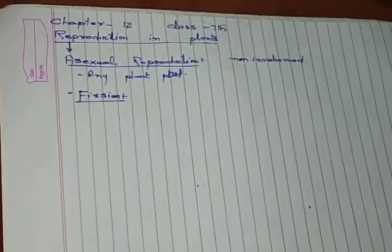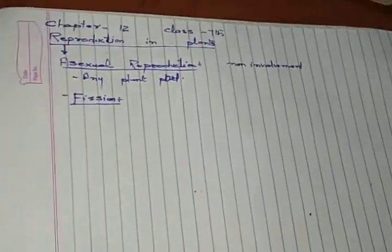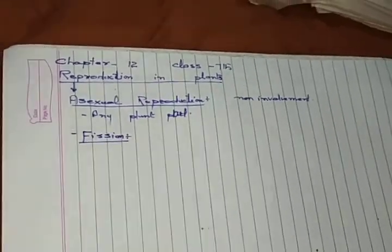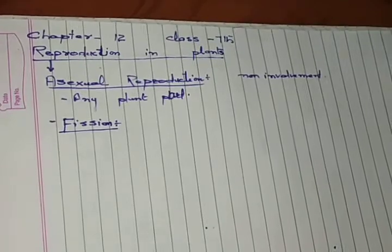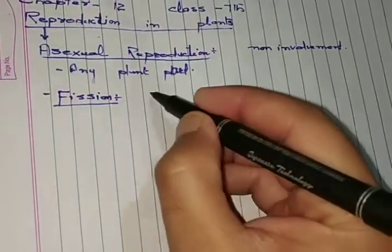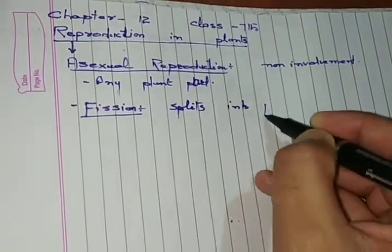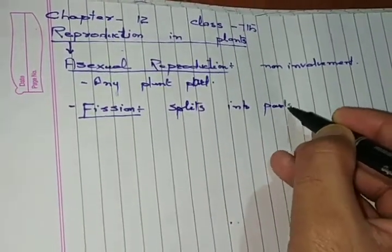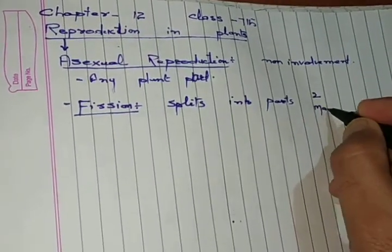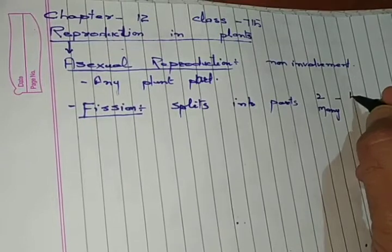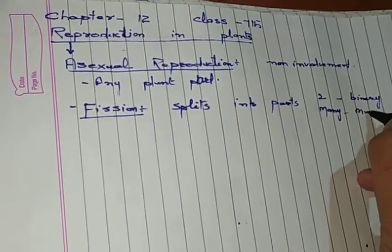In microorganisms, if we look at fission, the organism is split into parts. If the separation is into two parts, it is called binary fission. If it is in many parts, it is called multiple fission.